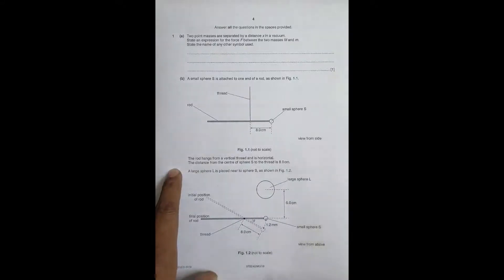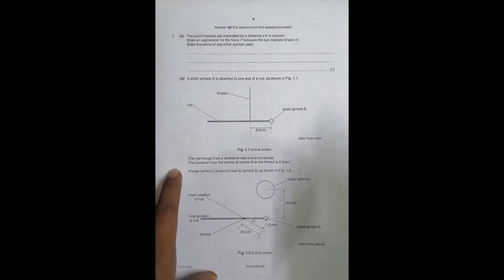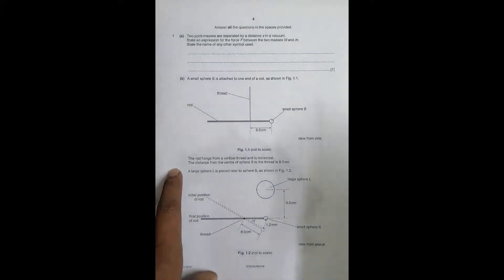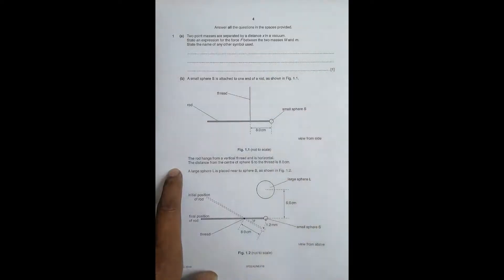Hello folks, today I have the question from the 2019 major paper for part two. This question has been skipping me, but now I got hold of it when a student asked to go through it and pointed out something worth noting. There are a lot of chapters involved here: it's about electric field, gravitation, and in part C it's even about the chapter of forces and moments.